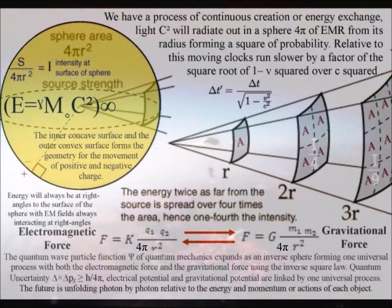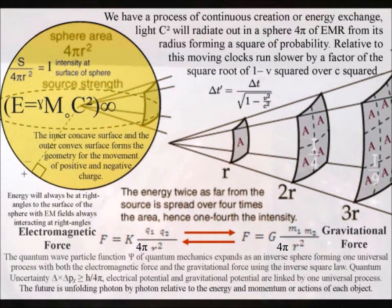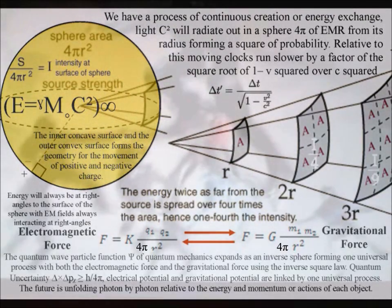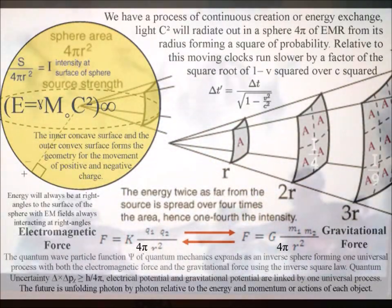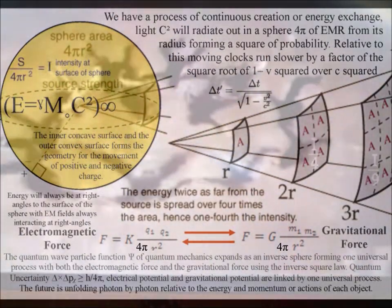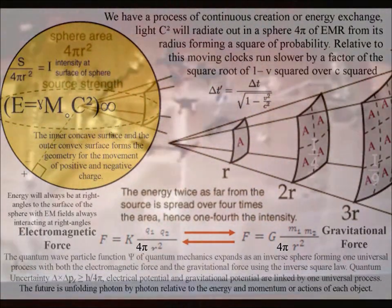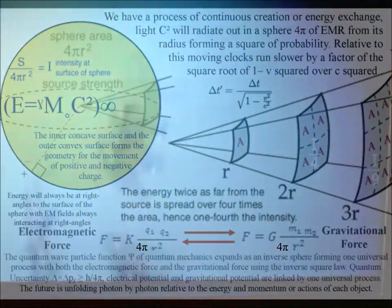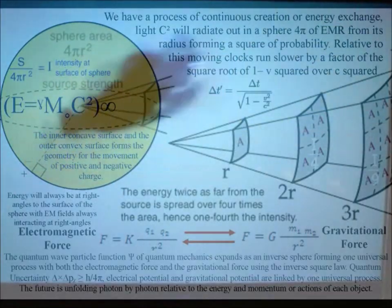Gravity is an emergent part of this geometrical process that naturally forms the inverse square law of electromagnetic fields and gravitational fields. The wave particle duality of light and matter in the form of electrons are forming an interactive process that we can interact with, forming a future relative to the energy and momentum of our actions.